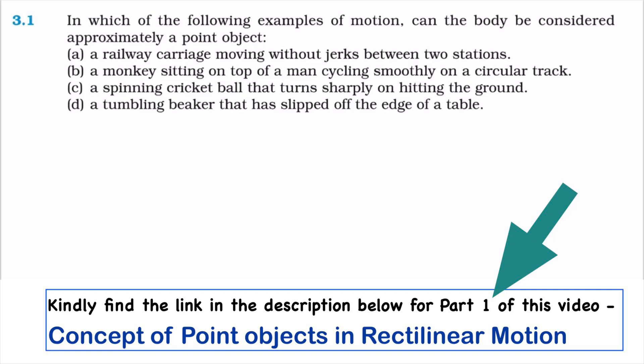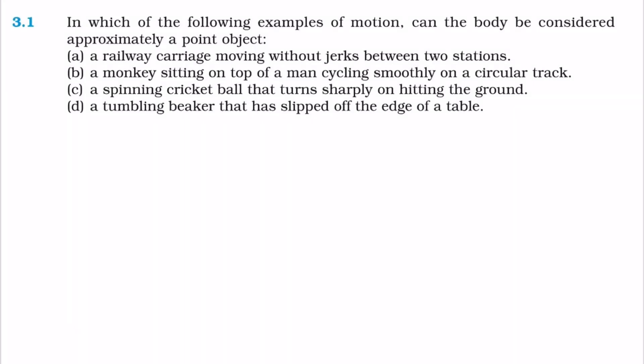First, we have a definition exercise problem, so we have Exercise 3.1 from the book. Which of the following examples of motion can the body be considered as approximately a point object? In these four options, we have to determine which can be considered as point objects.